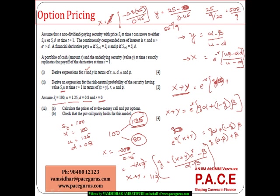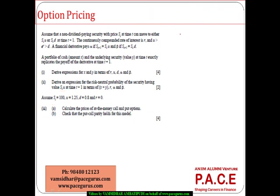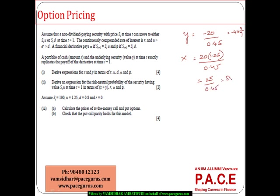For the put option: if the stock price goes to 125, the payoff is 0, so alpha equals 0; if it goes to 80, the payoff is 20, so beta equals 20. Using the formula, y equals (alpha minus beta) divided by (u minus d) equals minus 20 divided by 0.45, giving y equals minus 44 and 4/9. For x with r equals 0: x equals u·beta divided by (u minus d) equals 1.25 times 20 divided by 0.45 equals 25 divided by 0.45, giving 55 and 5/9. So x plus y again equals 11 and 1/9.